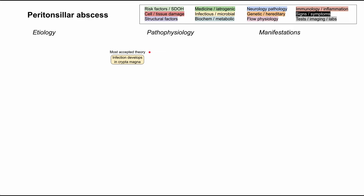You have an infection that develops in the cryptomagna. The tonsillar crypts are just part of normal physiology. They provide a sensory role for the immune system by allowing early exposure to infectious organisms. So it's a normal part of the tonsils — you have these crypts, these little divots in their structure, where you allow bacteria, viruses, and other pathogens to get in, and the idea is that you're exposing your immune system to them that way.